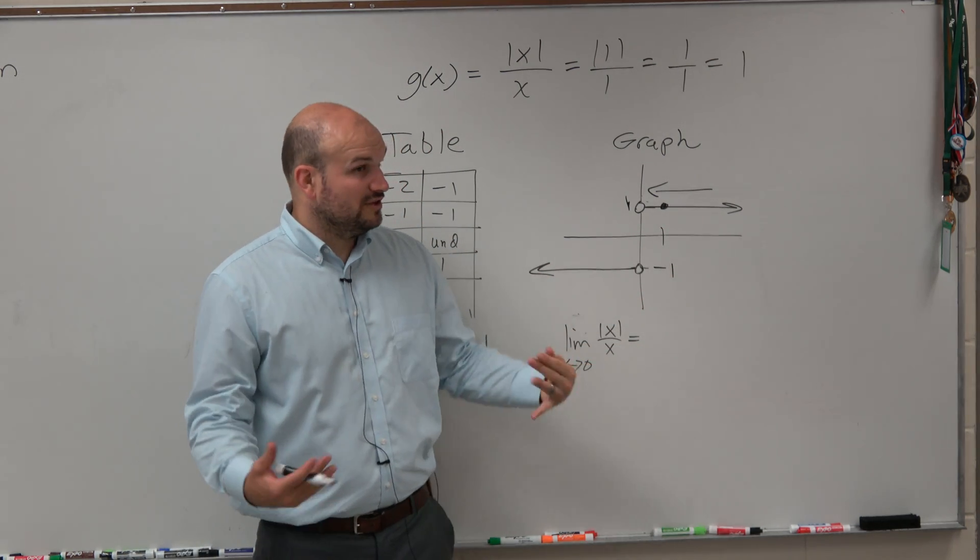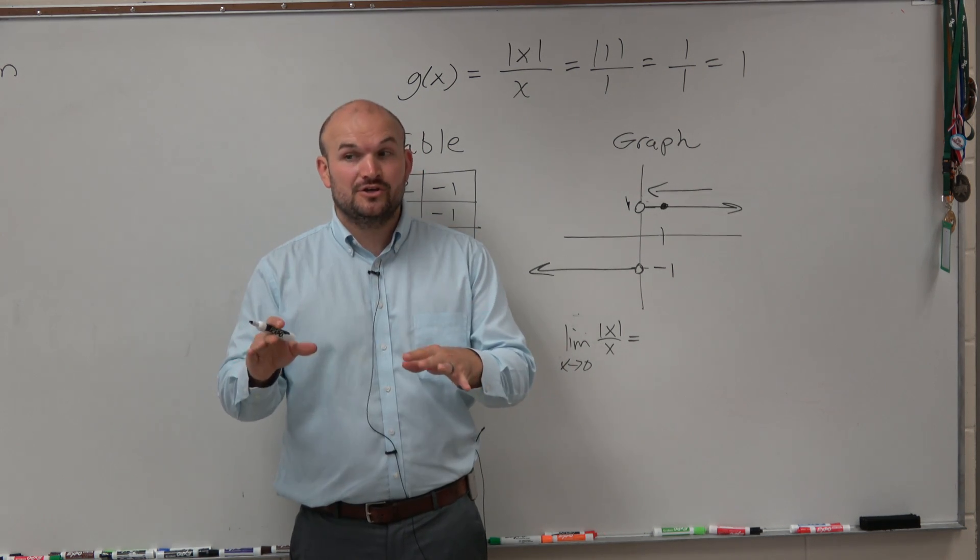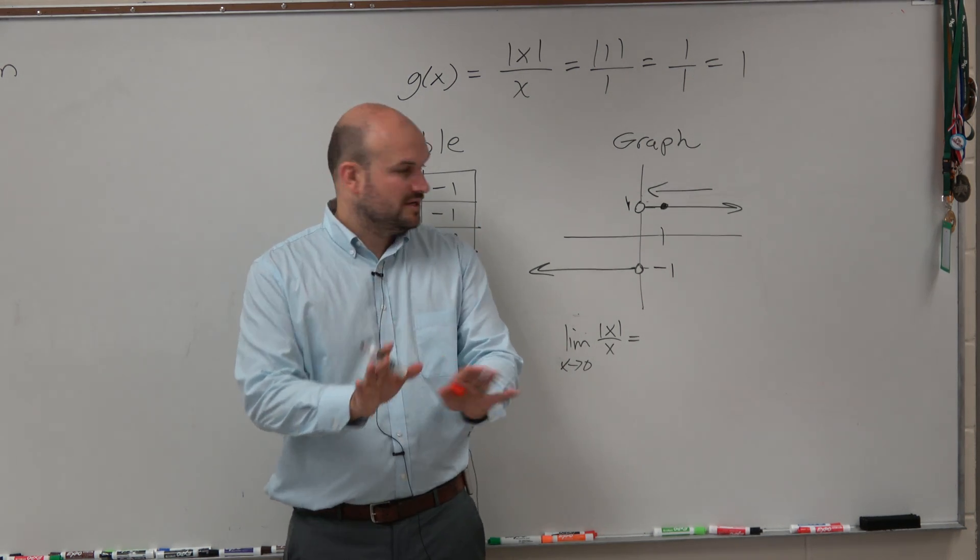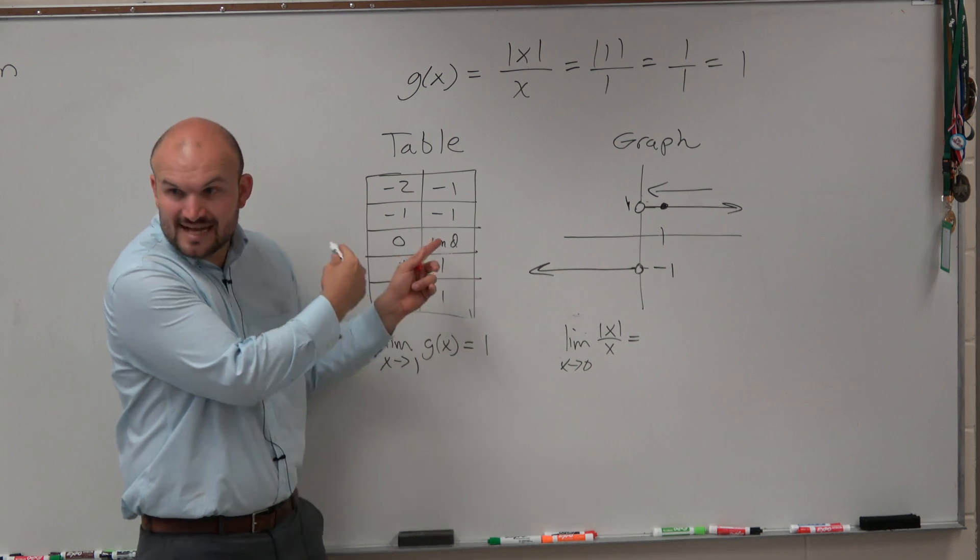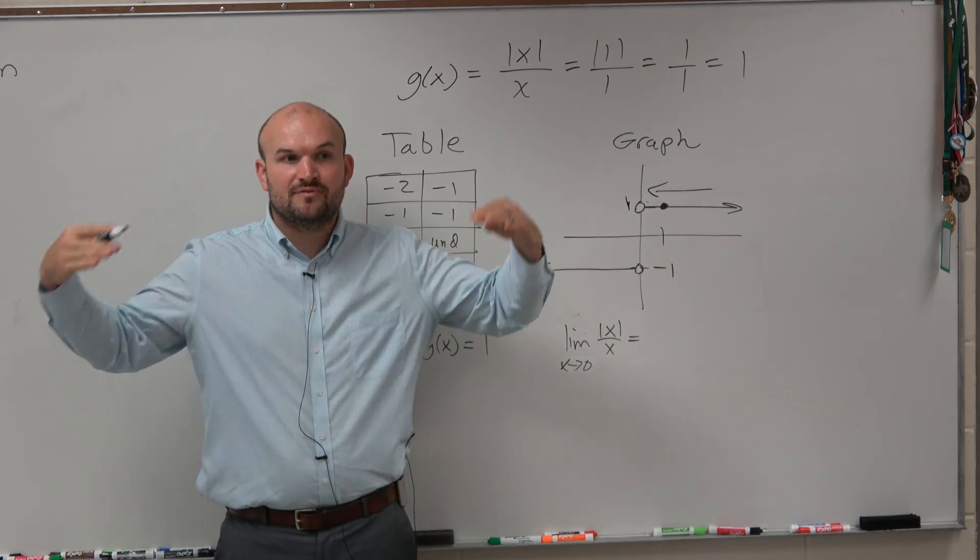For the general limit to exist, we have to approach the same value. It doesn't have to equal the value. It's okay that it's undefined, right? Remember the last example? It's okay if it's undefined. But are we approaching the same number from the left and from the right?